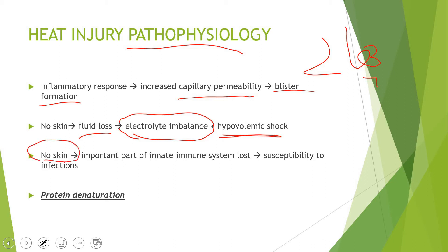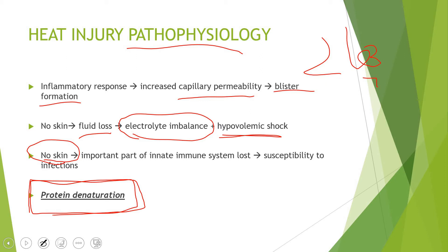The skin is an important part of our innate immune system, along with mucosa and the acidity of the skin. With loss of skin, the individual becomes susceptible to infections. An important point — highlighted because it relates to a past paper MCQ — is that heat is one of the agents that can cause protein denaturation. Most proteins in the body are present in muscles, so denaturation of muscle proteins can cause specific signs, which will be discussed later in the slides.